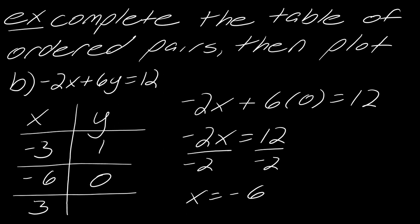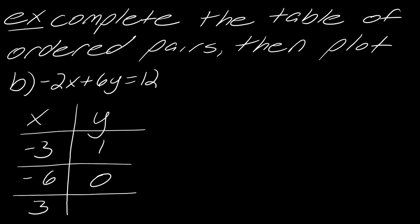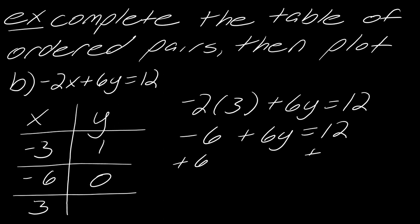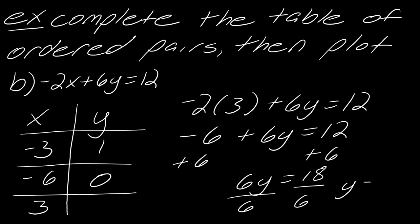For the last entry, I'll put in x = 3. So this gives −2(3) + 6y = 12, which becomes −6 + 6y = 12. Adding 6 to each side gives 6y = 18, then dividing by 6 gives y = 3.